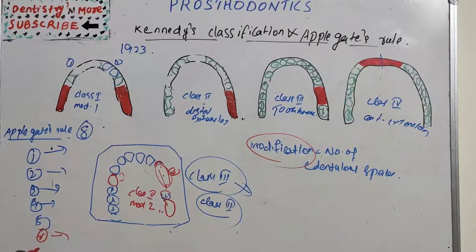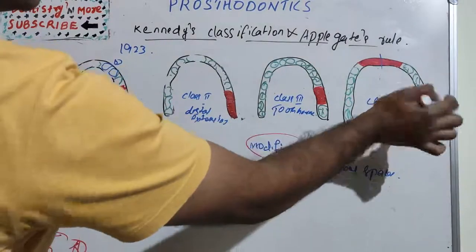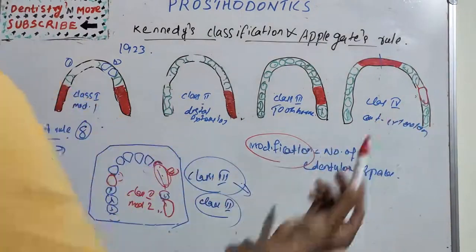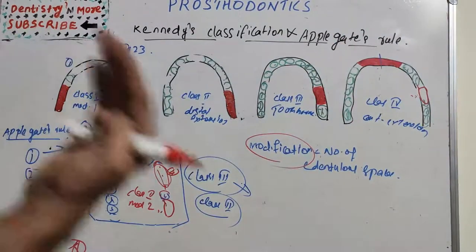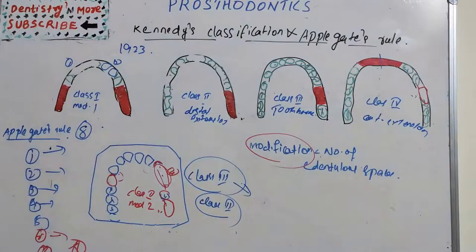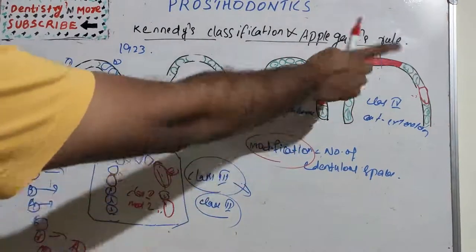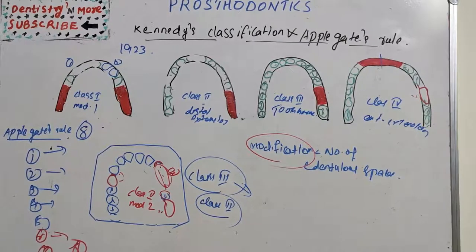Rule number 8: there can be no modification in Class 4, because any additional edentulous space will definitely be posterior to it and will determine the classification instead. If there is an edentulous space elsewhere, it becomes Class 3 modification 1 or modification 2. So no modification is possible in Class 4.